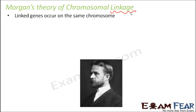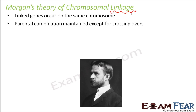As per this theory, linked genes occur on the same chromosome. Genes on the same chromosome have a physical linkage that allows them to be inherited together, making recombinations less frequent. The parental combination is maintained except for crossing overs — most of the time offspring prefer to be like the parents, but since crossing over takes place, recombinations are introduced. Recombination or crossing over happens because of incomplete linkage.